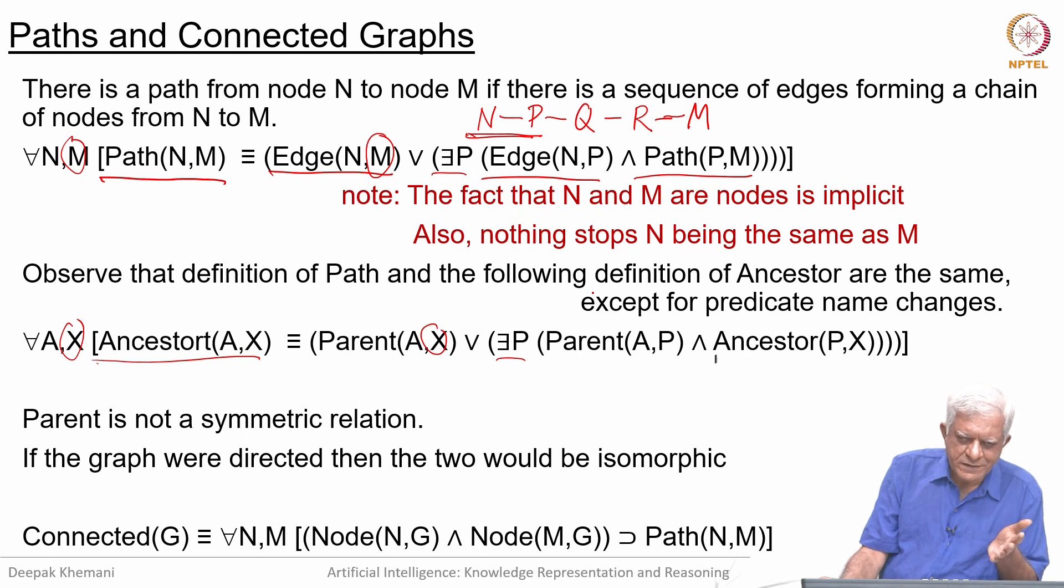If N is a node in the graph and if M is a node in the graph then there must be a path from N to M. A graph is said to be connected if you can go from any node in the graph to any other node in the graph. We can talk about properties of abstract entities like graphs.